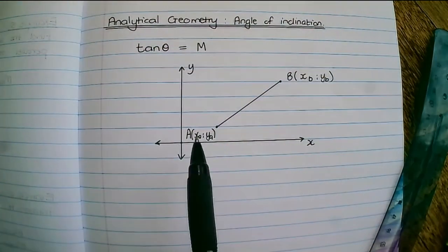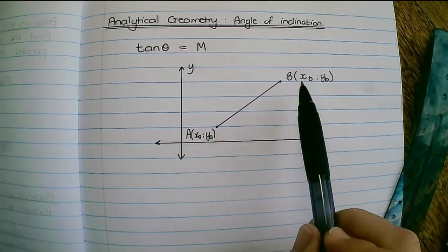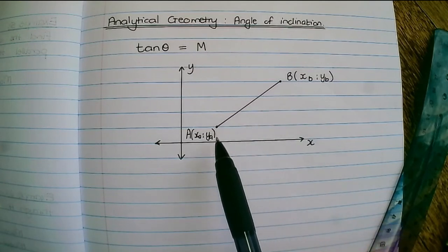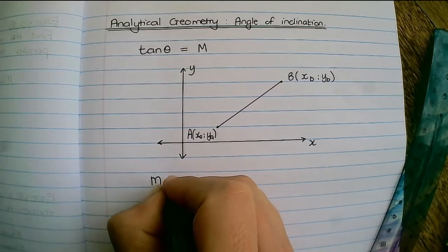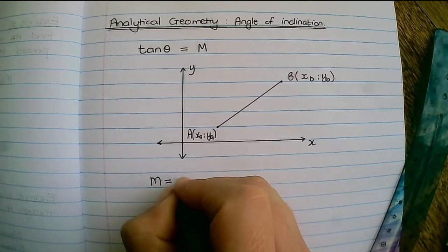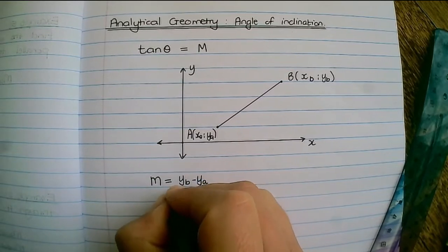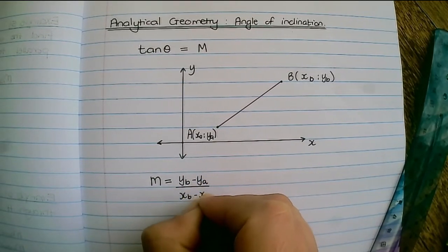So let's say on the Cartesian plane we have two points A and B and we want to find the gradient between line A and B. Then we would say the gradient is the y of B minus the y of A over the x of B minus the x of A.